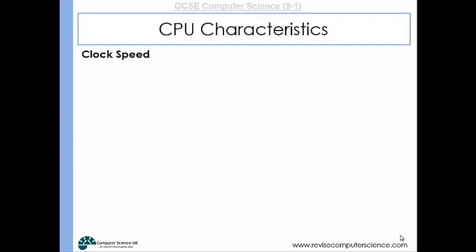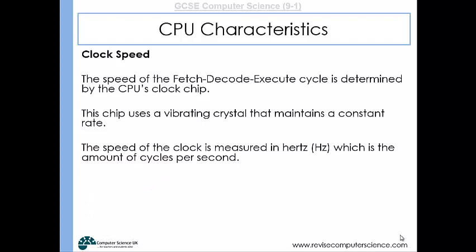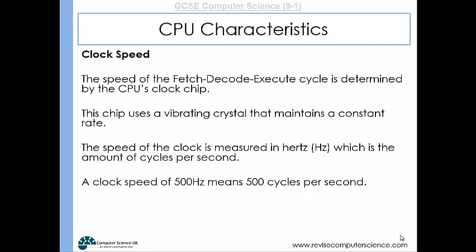The first characteristic is the clock speed. This is how quickly the CPU will carry out the fetch-decode-execute cycle. What determines the speed is the CPU's clock chip. Inside the CPU there's a tiny vibrating crystal — an electrical current goes through it, it vibrates and maintains a constant rate. The speed of the clock is measured in hertz, meaning how many fetch-decode-execute cycles it performs in a second. A 500 hertz CPU can do 500 cycles per second, so 500 instructions can be fetched, decoded and executed.